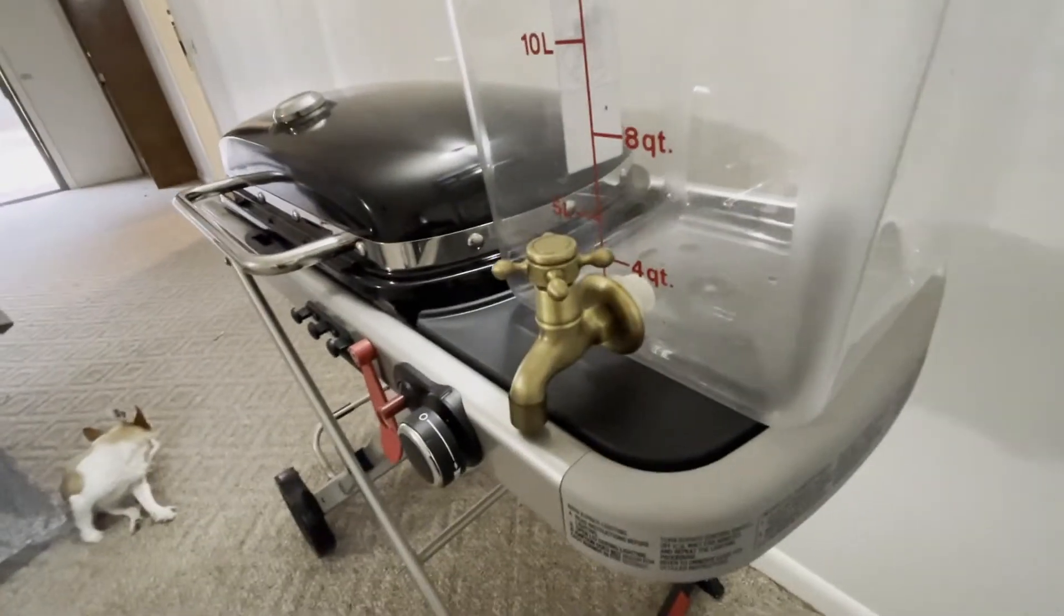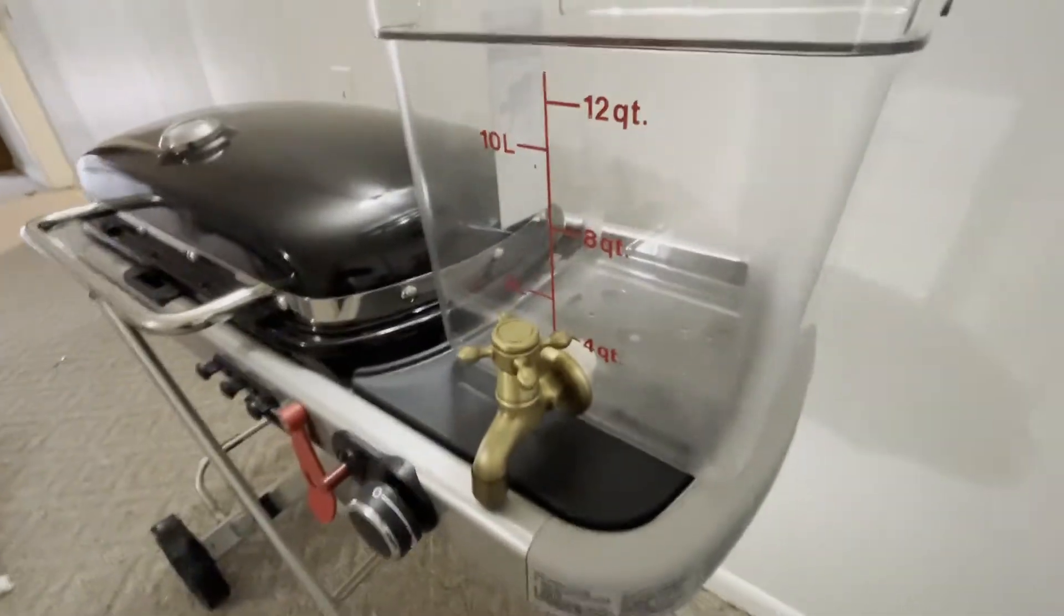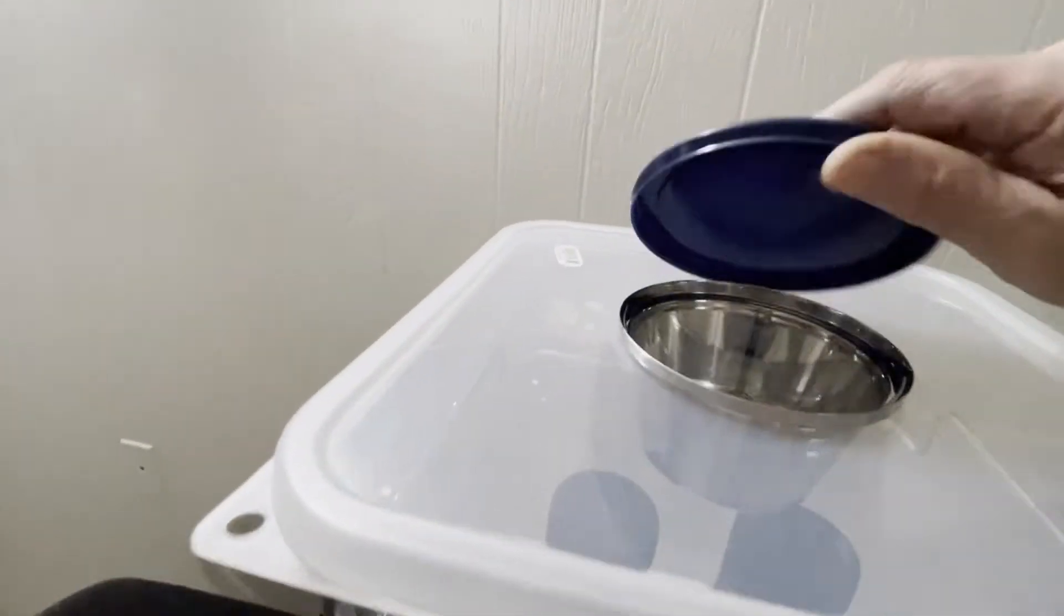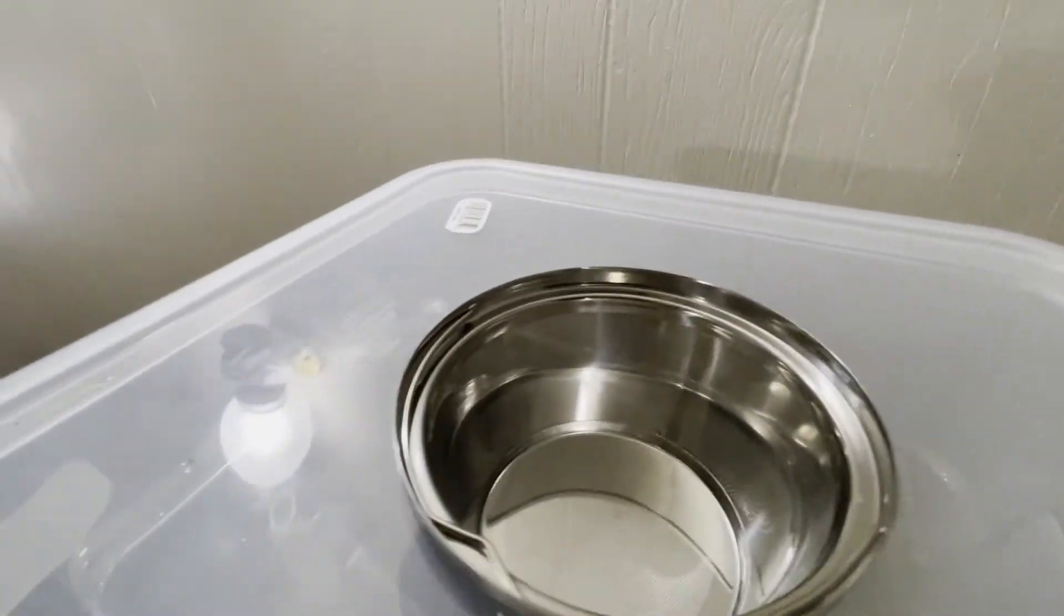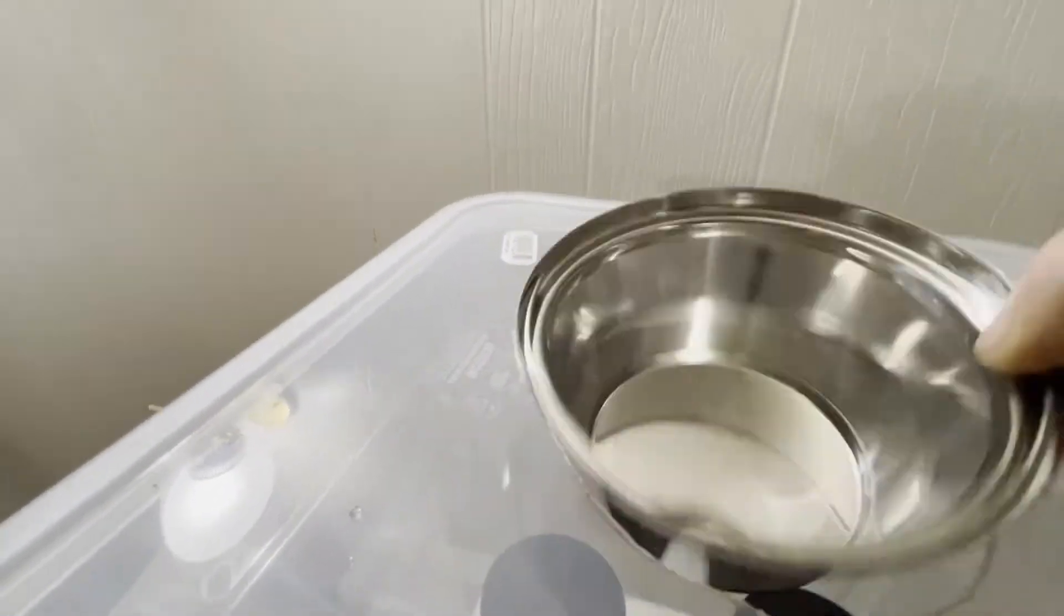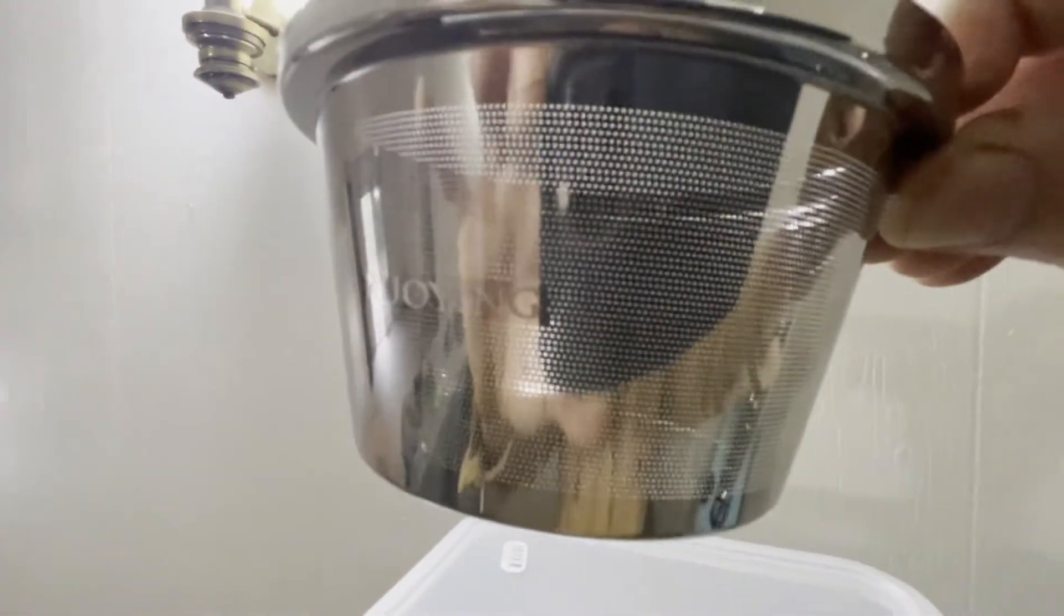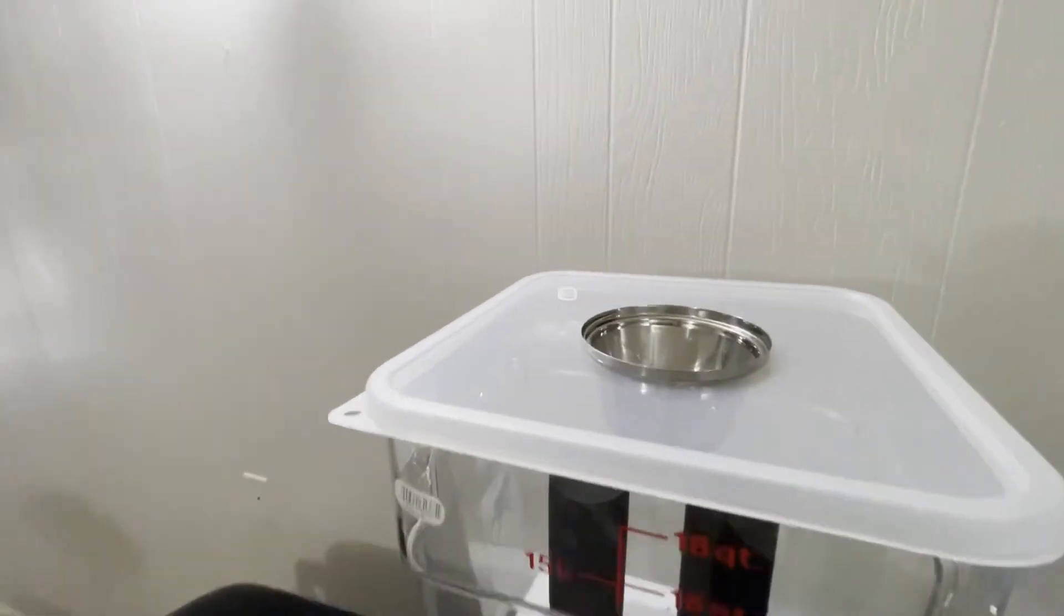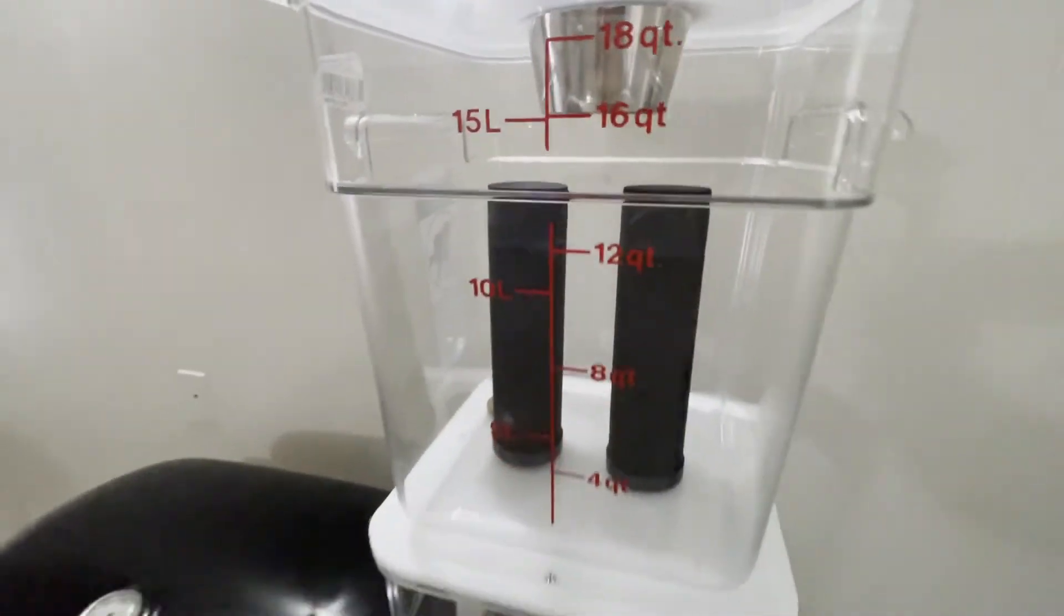I like this faucet much better, more sturdy, gonna last a lot longer I think. This little dilly bob right here, as you can see, I found it online. They call it a metal coffee filter. It actually has little holes through, you can actually see through it, little microscopic holes.